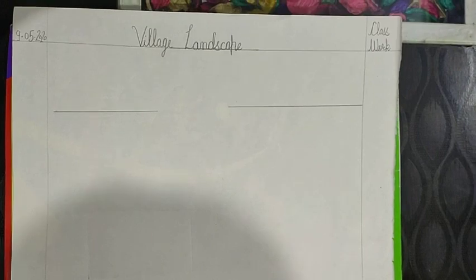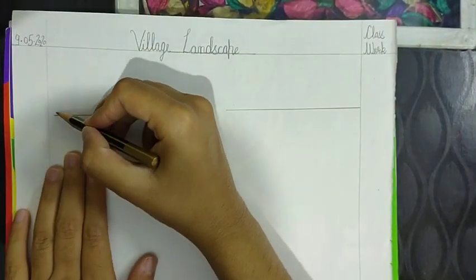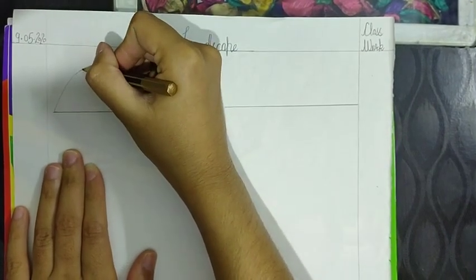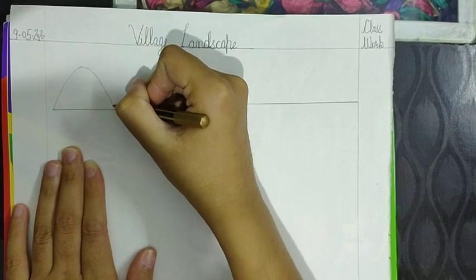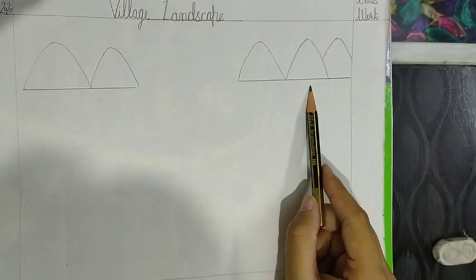For that, you have to draw triangles. Like this. You have to make two mountains on this side and three mountains on this side.